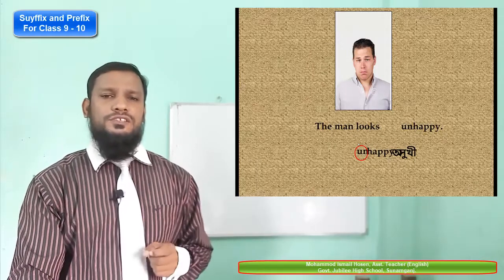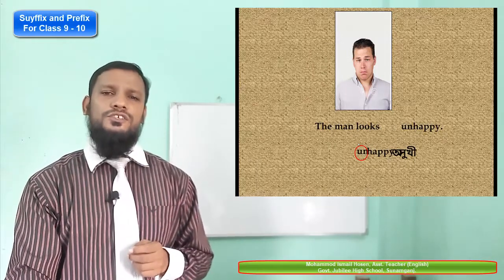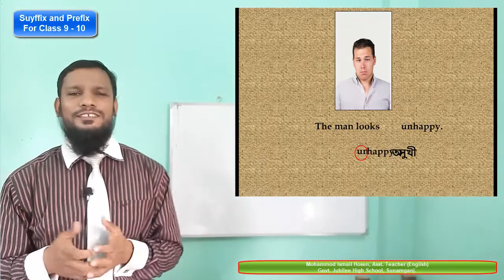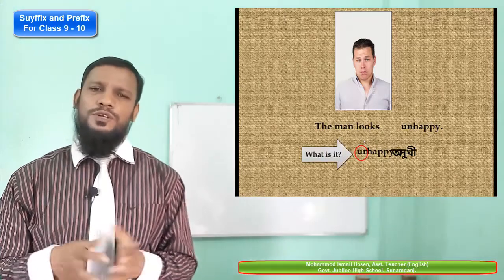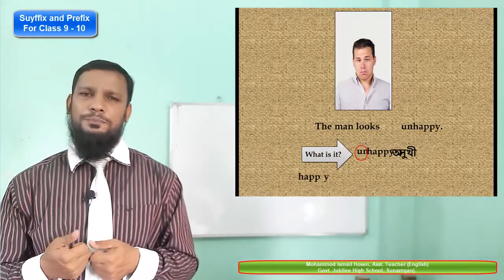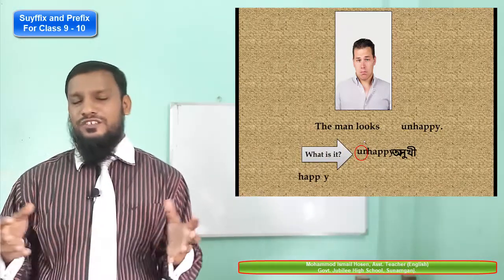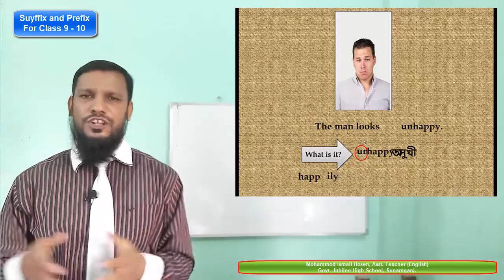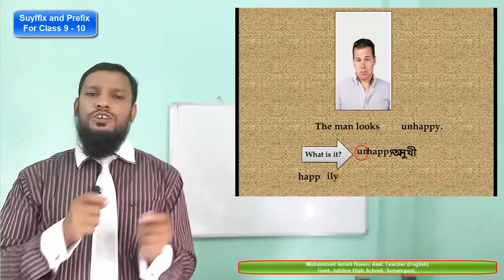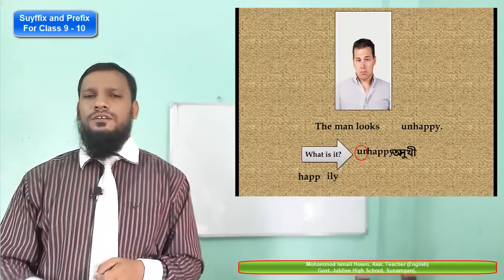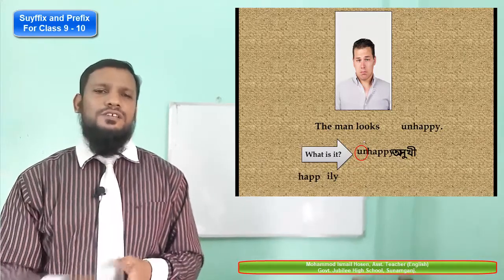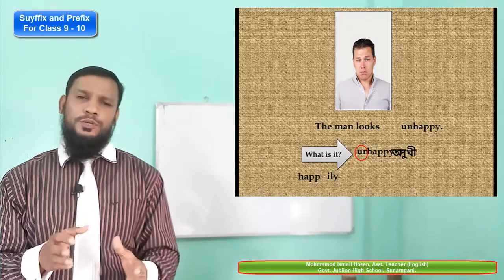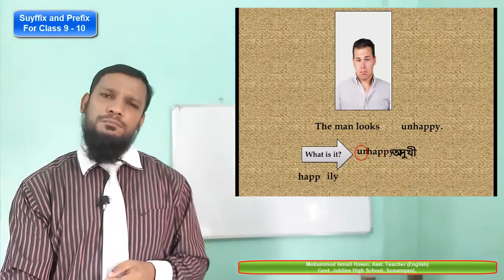This is 'unhappy' and 'un-' is a prefix. Sometimes we may say 'happily' — he speaks happily, he lives his life happily. The '-ily' suffix — what is this? This is a suffix, because it comes after the basic word.